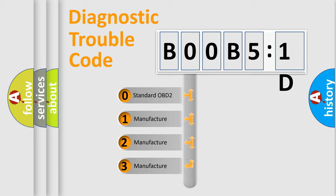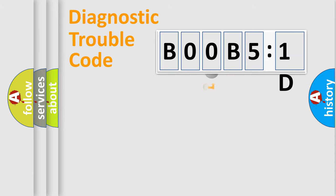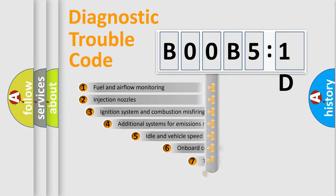If the second character is expressed as zero, it is a standardized error. In the case of numbers 1, 2, 3, it is a more prestigious expression of the car-specific error.